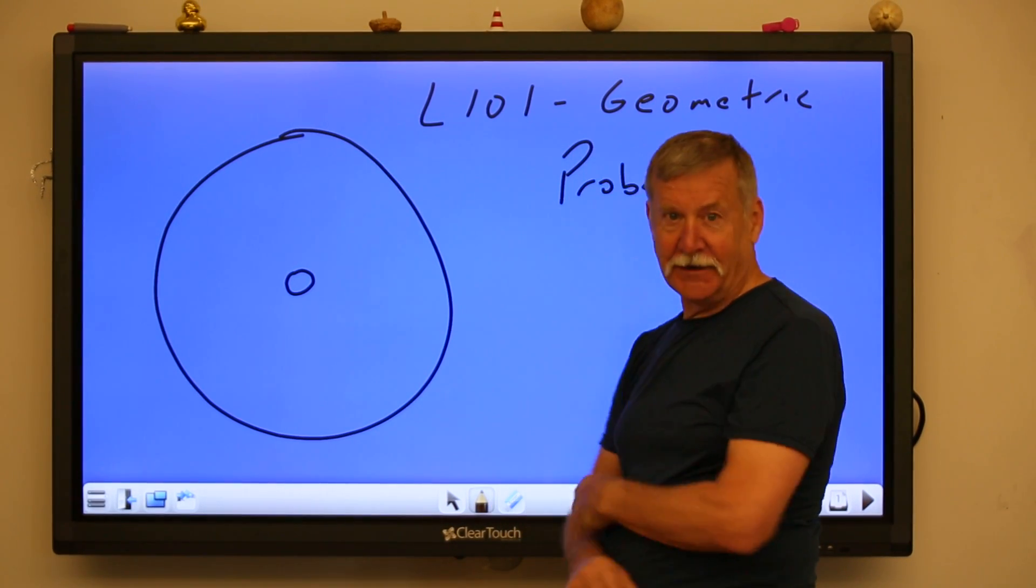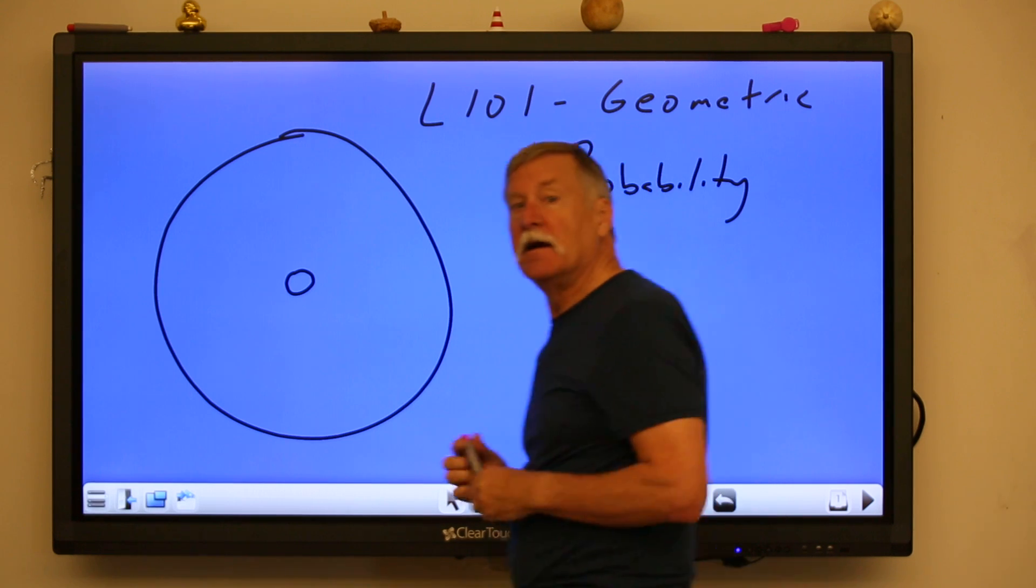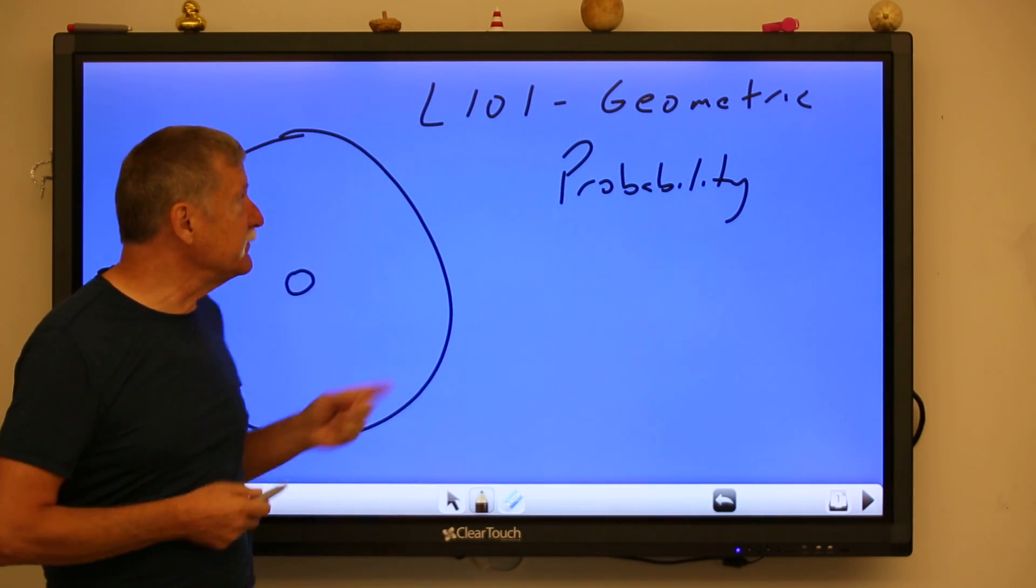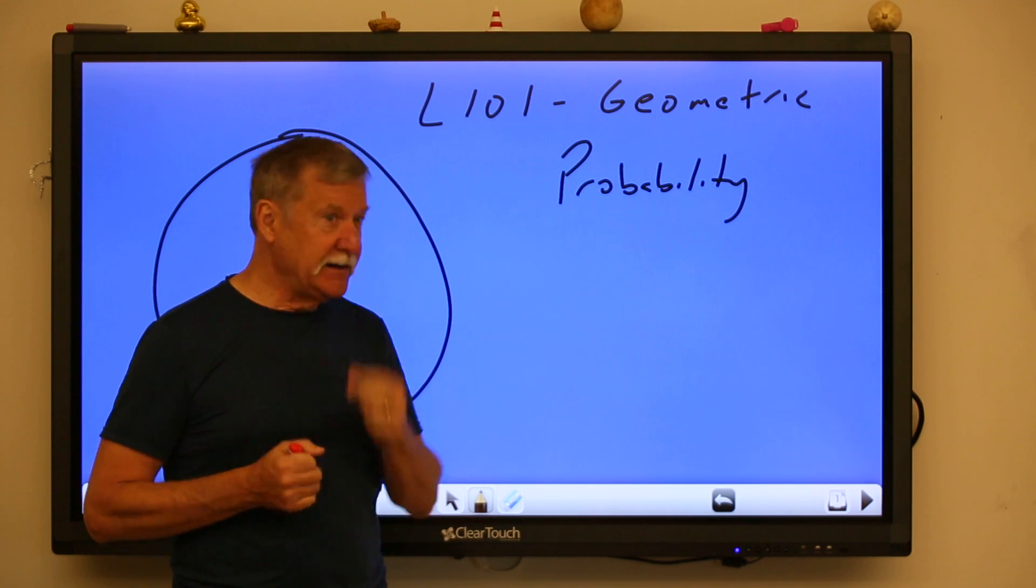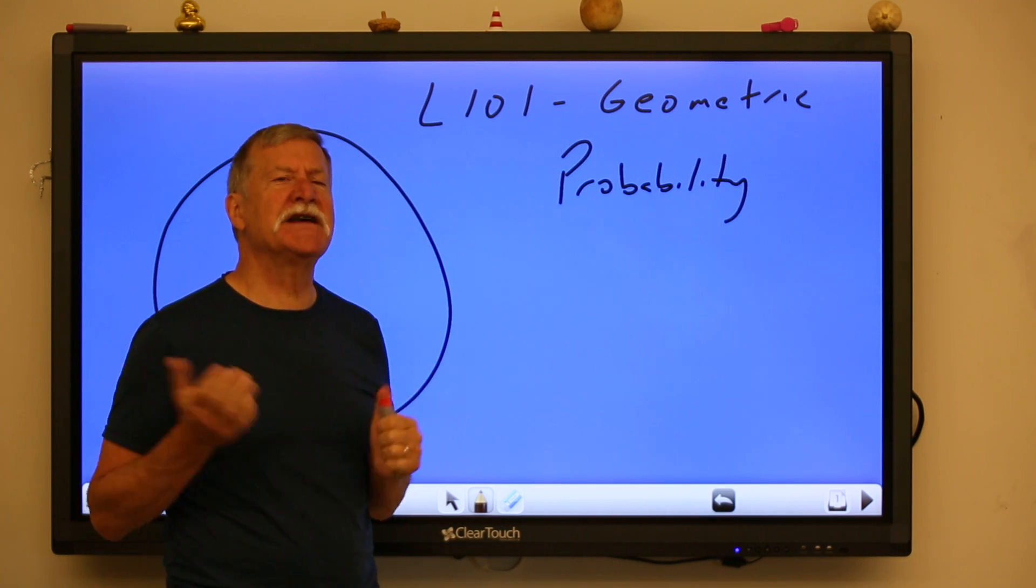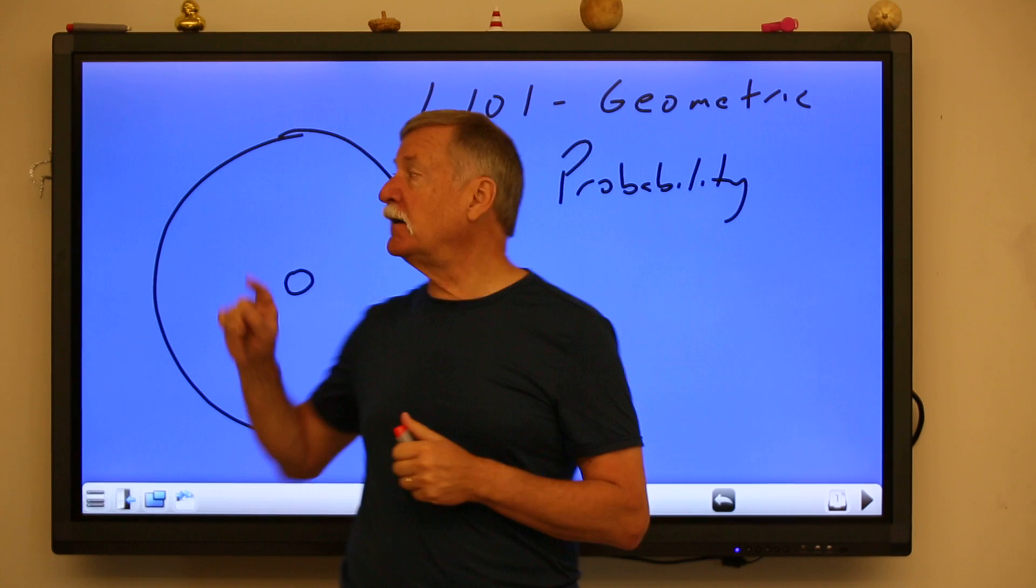Hello 7th grade, welcome to math. Today we talk about something called geometric probability, the idea of quantifying your chances of hitting the bullseye.